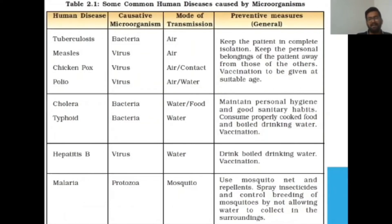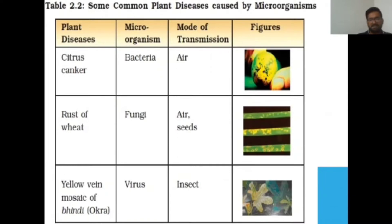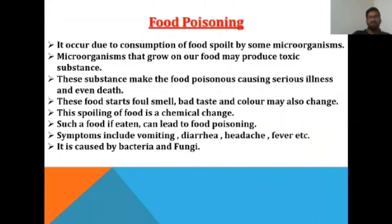Some common plant diseases caused by microorganisms: Citrus canker is caused by bacteria. Rust of wheat is caused by fungi and transmitted through air or seeds. Yellow vein mosaic of bhindi is caused by a virus and transmitted through insects.